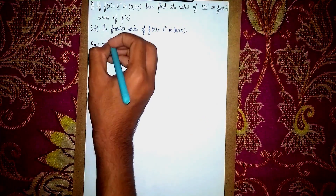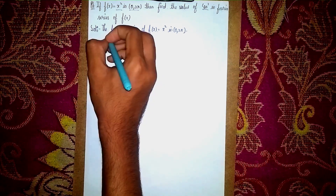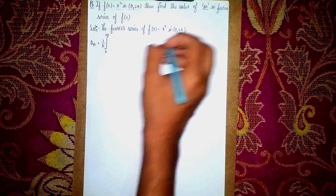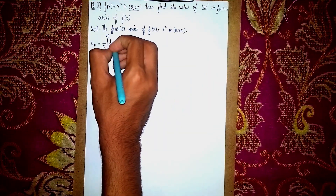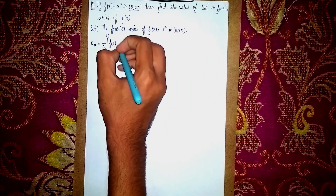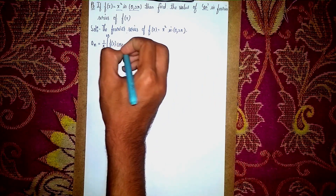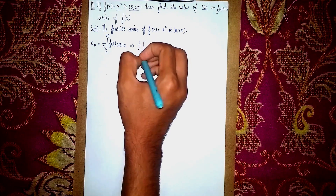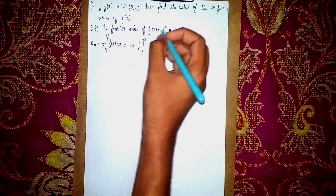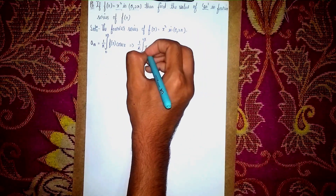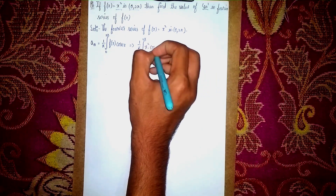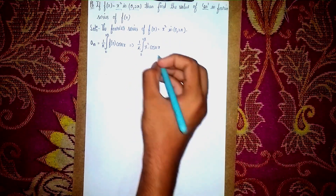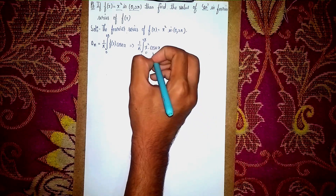Since we only need to find aₙ, we use the formula: aₙ = (1/π) ∫₀²π f(x) cos(nx) dx. Substituting f(x) = x², this becomes aₙ = (1/π) ∫₀²π x² cos(nx) dx. Now I will evaluate this using the uv form — specifically by Bernoulli's rule.